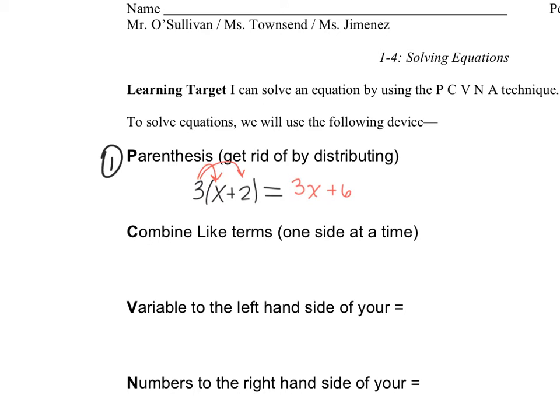Step two: combine your like terms, one side at a time. So, for instance, x's with x's, numbers with numbers.